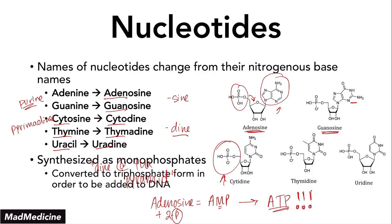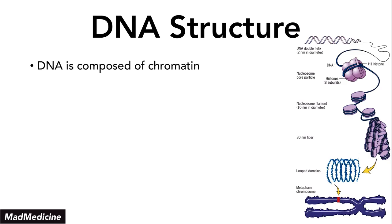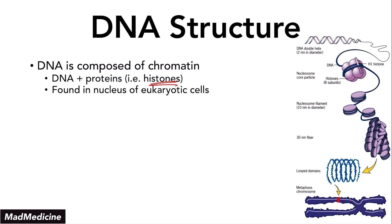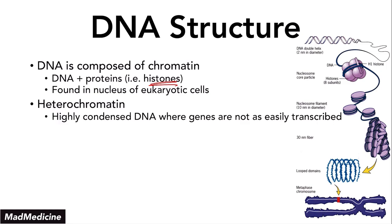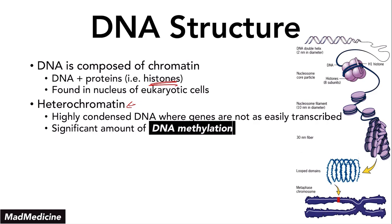When it comes to DNA structure, it is composed of chromatin. Chromatin is essentially DNA plus proteins, and those proteins are known as histones. DNA itself is found in the nucleus of eukaryotic cells. When talking about chromatin, you also need to remember the concept of heterochromatin — highly condensed DNA. The portions of your DNA that are not being transcribed into active genes or proteins are going to be heterochromatin — really highly condensed portions.